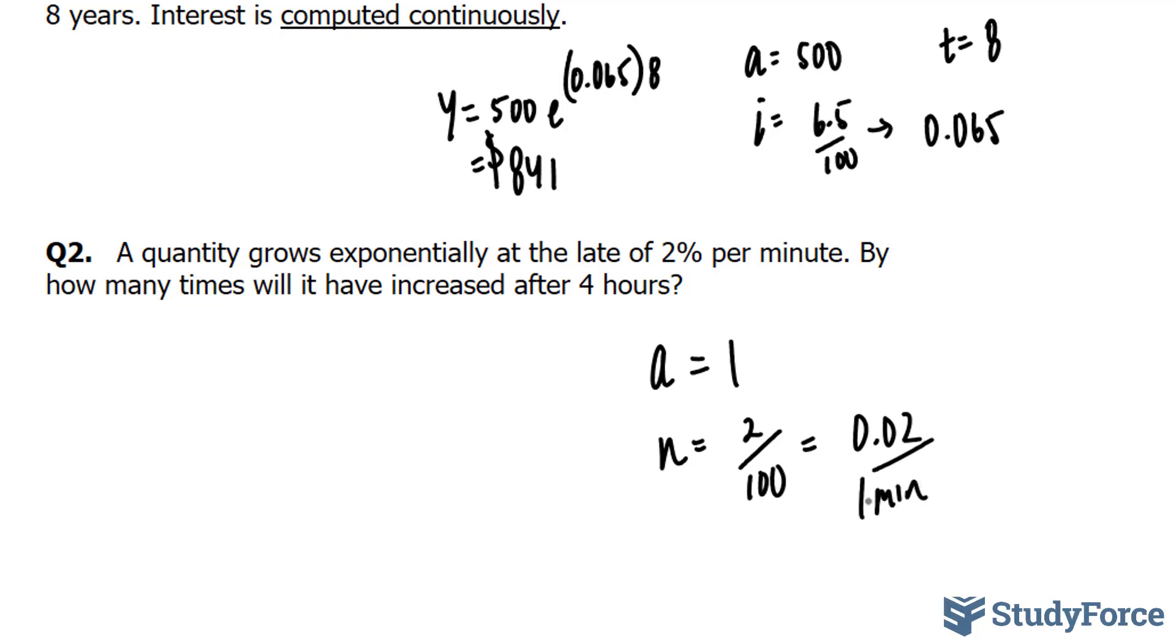By how many times will it have increased after 4 hours? Now look, your rate, which we refer to as n, is in minutes. But the time, t, is 4 hours. Unfortunately, n and t do not agree with each other.